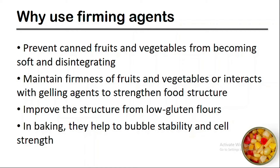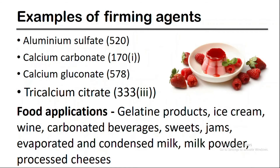Ammonium sulphate, calcium carbonate, calcium gluconate, and tricalcium citrate are some examples of firming agents used in the food industry. Examples of food applications of firming agents are gelatine products, ice cream, wine, carbonated beverages, sweets, jams, evaporated and condensed milk, milk powder, and processed cheese, etc.